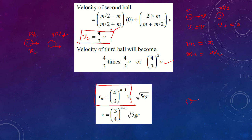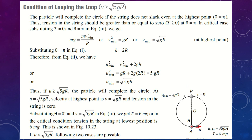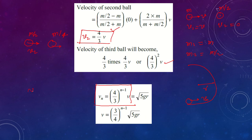We want the nth ball with velocity vₙ to complete the circle of radius r. The minimum velocity at the bottom of a circular loop to complete it is √(5gr), where g is gravitational acceleration and r is the radius. Setting (4/3)^(n-1) · v = √(5gr), we get the minimum velocity for the first ball: v = (3/4)^(n-1) · √(5gr).